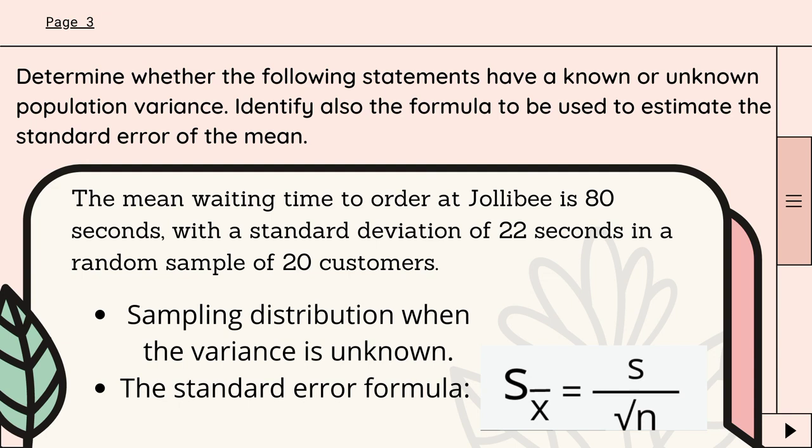Here is the question. Why do we say that this statement has an unknown population variance? First, the sample size is given, which is 20. And since we are given the standard deviation of the sample that is S and the population was not mentioned, we cannot solve the population variance.